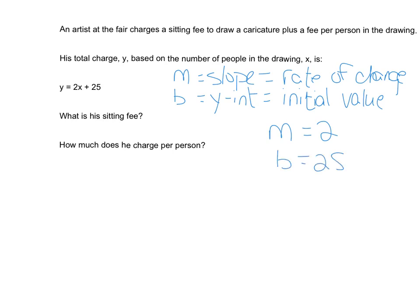The first question is: what is the sitting fee? This is what you pay just to sit down and have him draw you — it doesn't matter how many people you have. That's the initial value, which is b, the y-intercept, so his sitting fee is $25. How much does he charge per person? 'Per person' means rate of change, which is the slope m, and here m is 2, so he charges $2 per person.